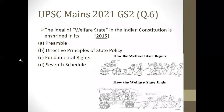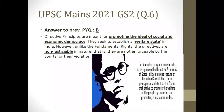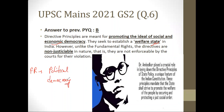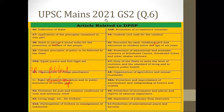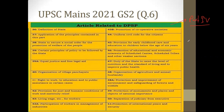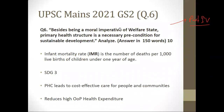DPSP promotes social and economic democracy, while Fundamental Rights promote political democracy. DPSP covers Articles 36 to 51 in Part 4 of the Constitution. Fundamental Rights cover Articles 12 to 35 in Part 3. Remember these parts because many questions have been asked by UPSC and other PSCs on them. Now let's come to the specific question.